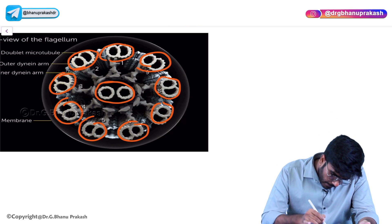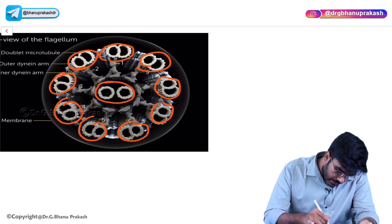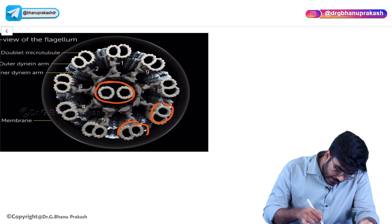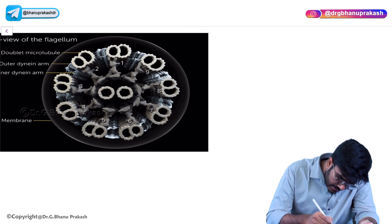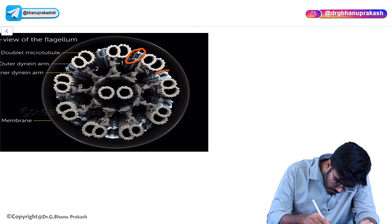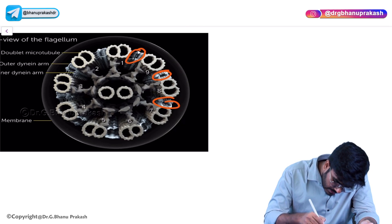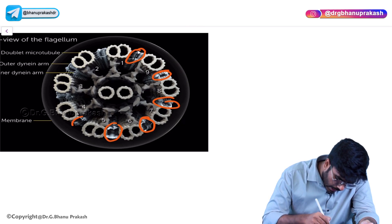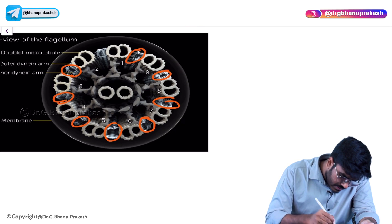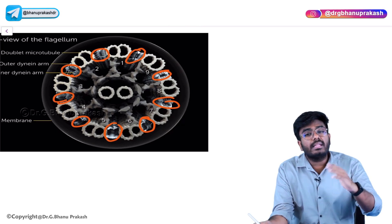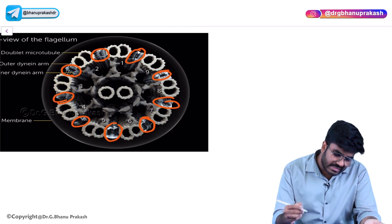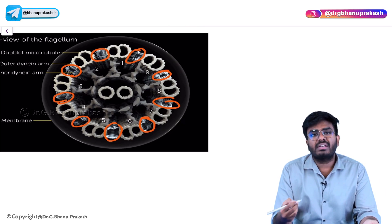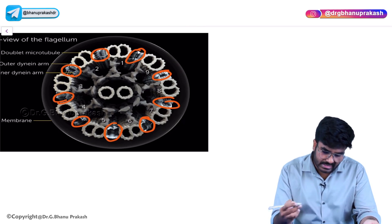The filaments here are connected with proteins - the blue color proteins I am highlighting. These are the proteins called dynein arms. The dynein arms are the connecting proteins which are helping in the movement of the cilia as well as flagella. Whenever there is a defect in the dynein arms, that will cause Kartagener's syndrome.